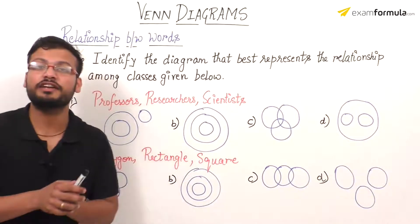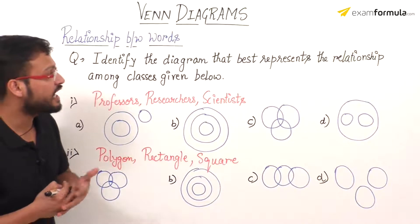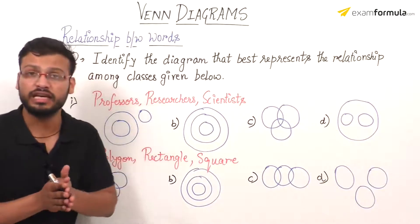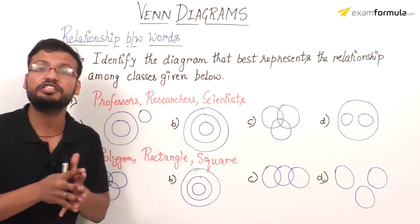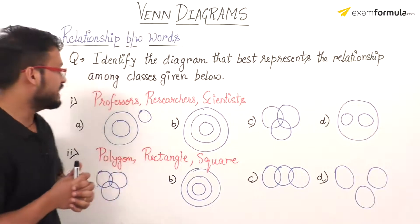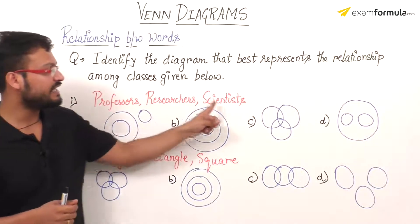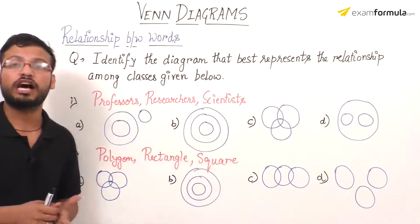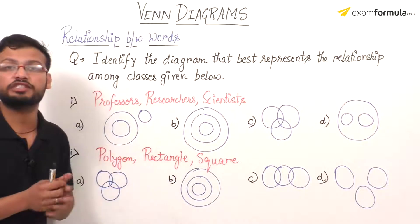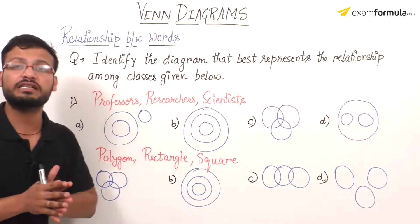Next, let us consider some questions related to Venn diagrams. The first question says: identify the diagram that best represents the relationship among the classes given below. I have three given words and I need to find a relationship among them using analytical ability, then represent them through an appropriate Venn diagram. The three words given are professors, researchers, and scientists.